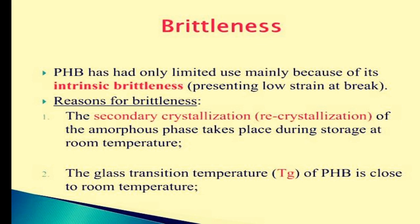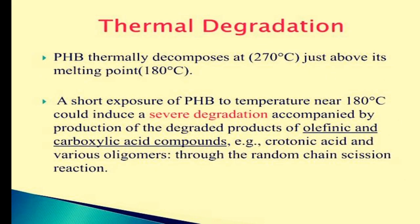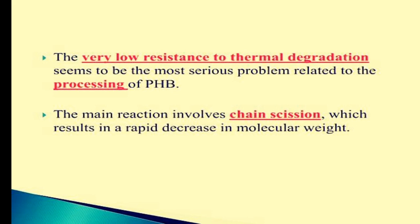Reason for the brittleness: The secondary crystallization of the amorphous phase takes place during storage at room temperature. The glass transition temperature of PHB is close to room temperature. Thermal degradation: PHB thermally decomposes at 270 degrees Celsius, just above its melting point of 180 degrees Celsius. A short exposure of PHB to temperatures near 180 degrees Celsius could induce severe degradation accompanied by production of olefinic and carboxylic acid compounds, e.g. crotonic acid and various oligomers, through random chain scission reactions. The very low resistance to thermal degradation is the most serious problem related to the processing of PHB, and the main reaction involves chain scission which results in a rapid decrease in molecular weight.